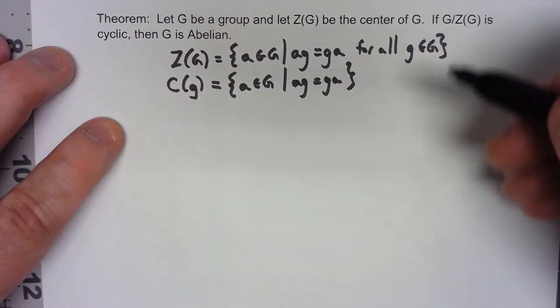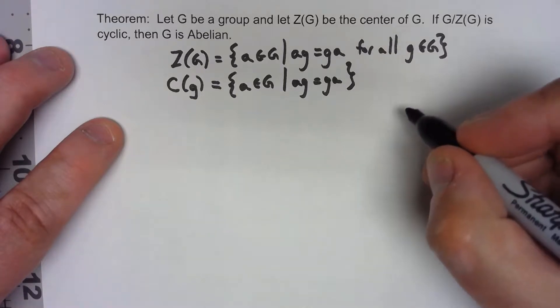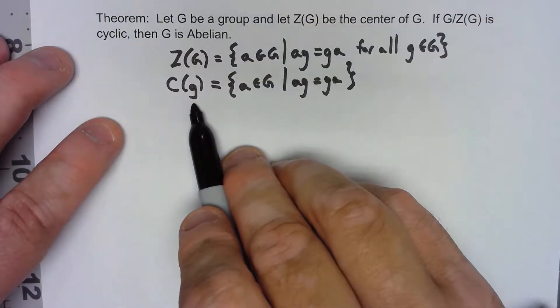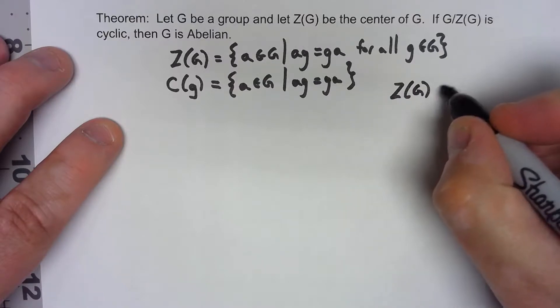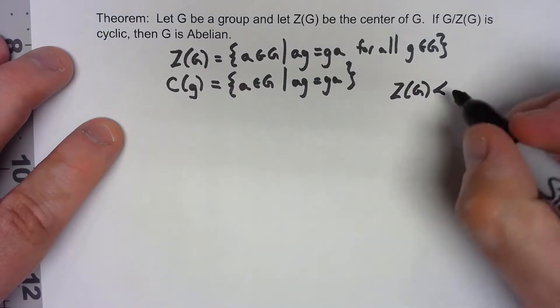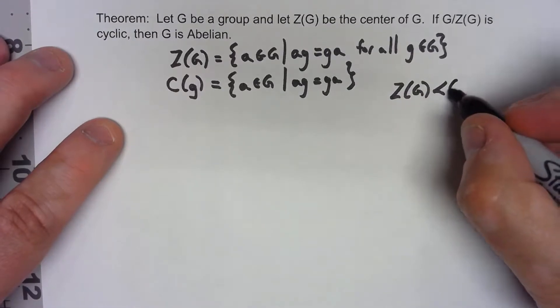So it's worth noting before doing anything else is that no matter what group element G we pick, the center of G has to be a subgroup of the centralizer of group element G.